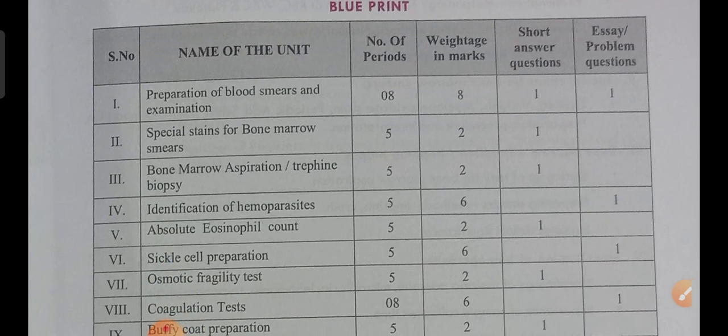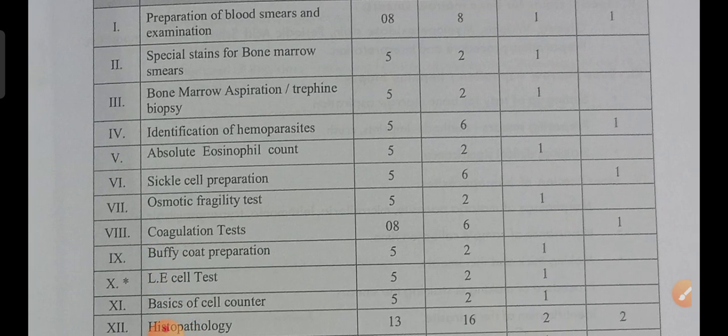Second unit, you may get 2 marks weightage — only 2 marks questions. Third unit, you may get 2 marks weightage — only very short answer questions. Fourth unit, you may get 6 marks weightage — that is a long answer question. Fifth unit, short answer questions 2 marks and very short answer question 1 mark. Sickle cell preparation has 6 marks weightage — that is a long answer question.